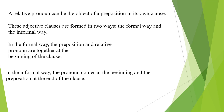Relative pronouns as objects of prepositions (whom, which, that): 'The address to which I sent my application was incorrect.' These adjective clauses are formed in two ways — formal and informal. In the formal way, the preposition and relative pronoun are together at the beginning: 'for whom I did a favor,' 'with whom I shared a secret,' 'to which I sent my application,' 'in which the gift was wrapped.' In the informal way, the pronoun comes first and the preposition goes at the end: 'whom I did a favor for,' 'which I sent my application to,' 'that the gift was wrapped in.'